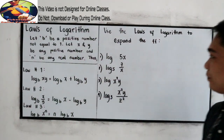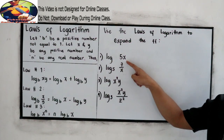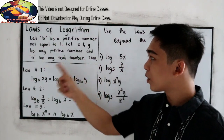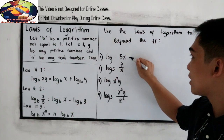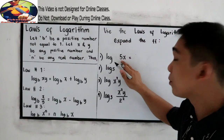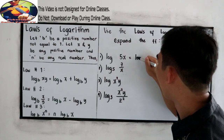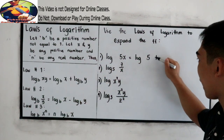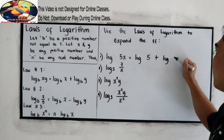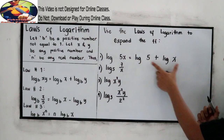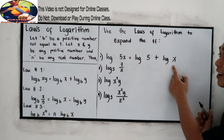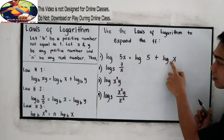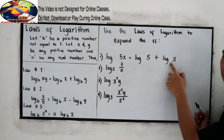Let's try Number 1: log 5x. This falls under Law Number 1 — it's multiplication, so we expand using addition. The answer is log 5 plus log x. This is a common logarithm, so the base is 10 for both terms.